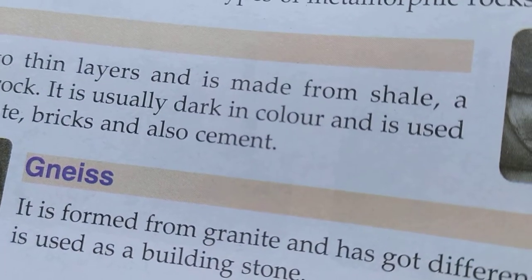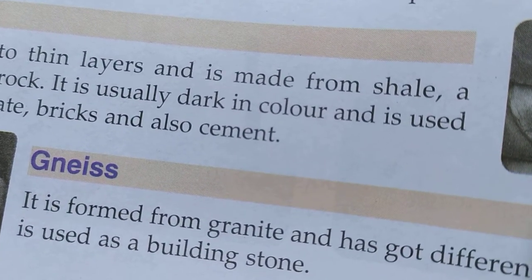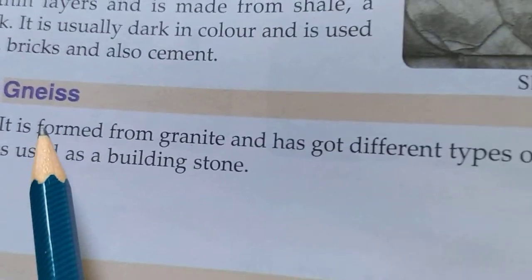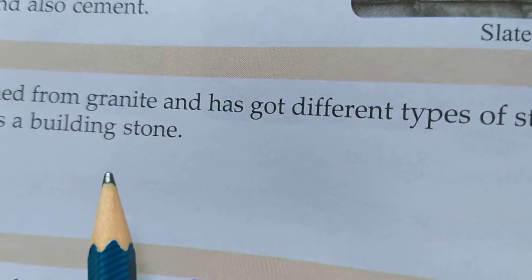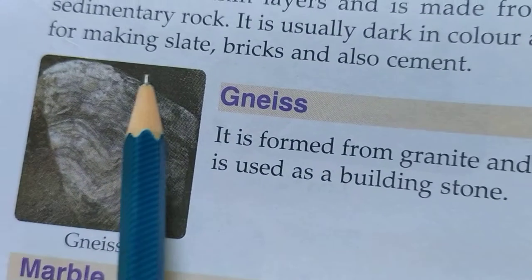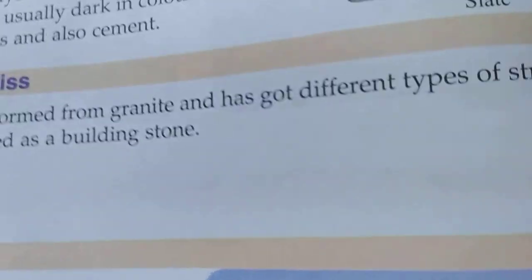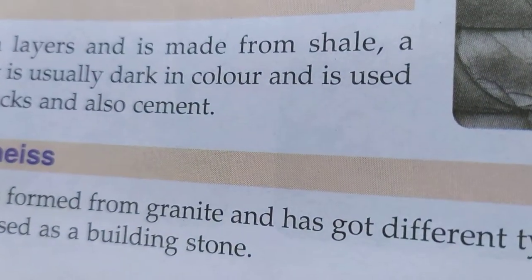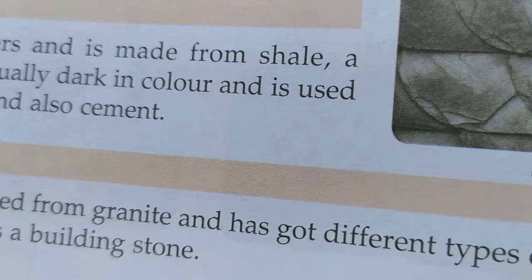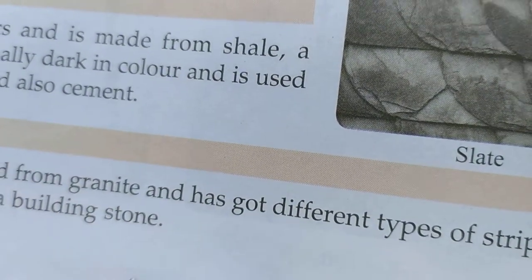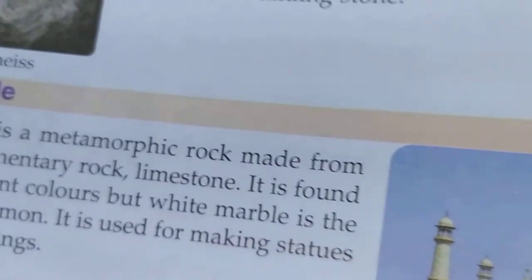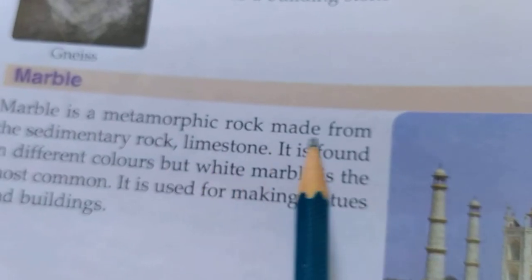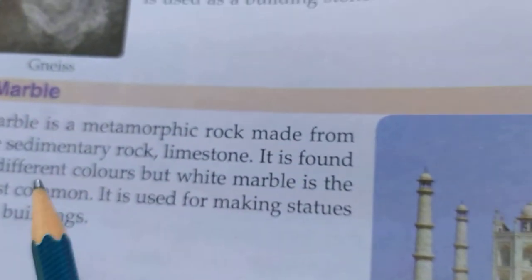Slate is used in making slates, bricks and cement. Next is granite. Granite is used as a building stone. Many types of buildings use granite rock.